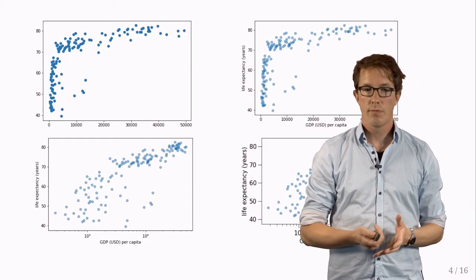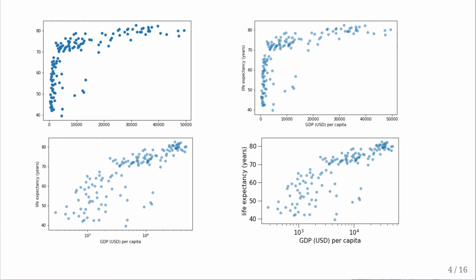Here is an example from the Gapminder data set where I plot the life expectancy as a function of the GDP. The dots represent different countries. I start with a rough plot on the top left, then make the dots a bit transparent and edit axis titles.